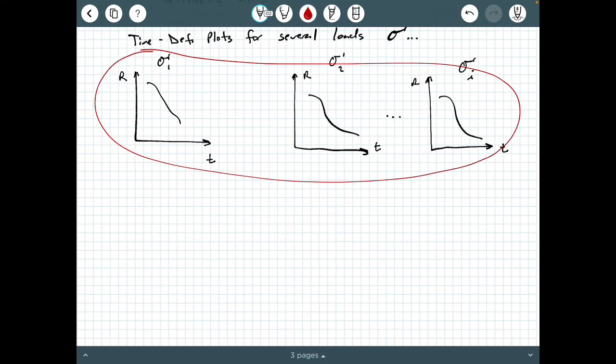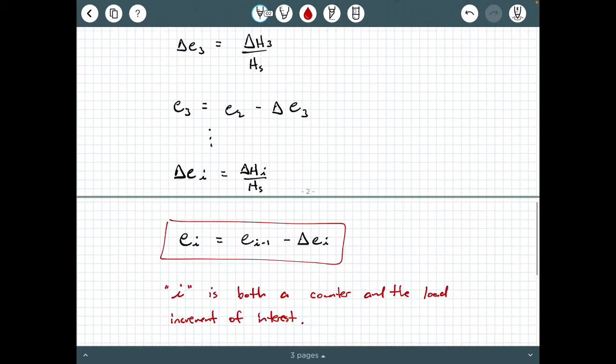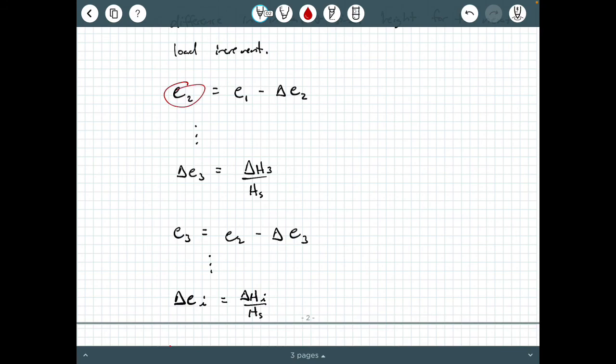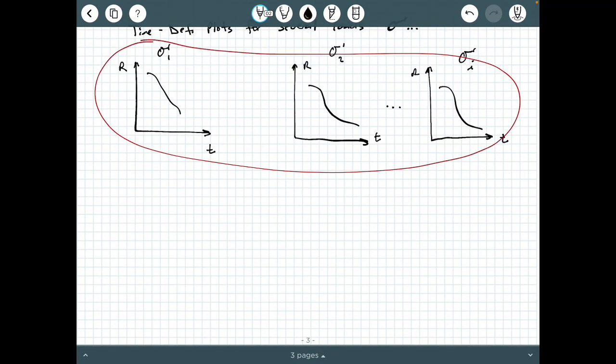From all of these plots, you perform this six-step procedure where you're iterating in step five. That's where you're calculating all of these E values for each load increment. What you end up with is one plot at the end that incorporates aspects from all of these time deformation plots. The sigma prime axis is typically on a log scale.